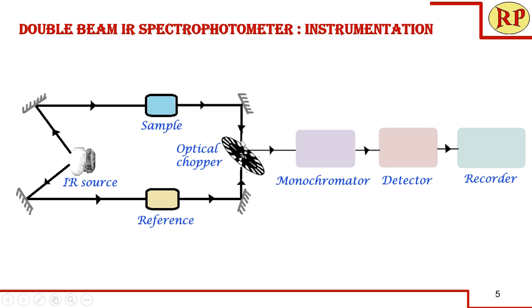For each frequency, the sample and reference beams go alternately into the monochromator. The monochromator is not a simple prism as seen in other spectrophotometers — it is a complex component containing a prism or grating, slits, mirrors, and filters. If a prism is used, we normally use NaCl or KCl prisms. The role of the monochromator is to disperse the polychromatic light coming out of the sample and reference into individual frequency components.